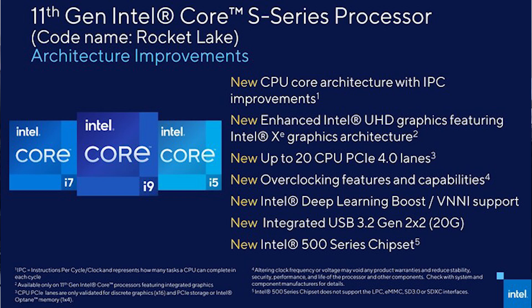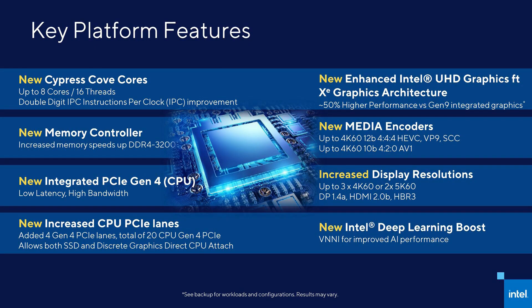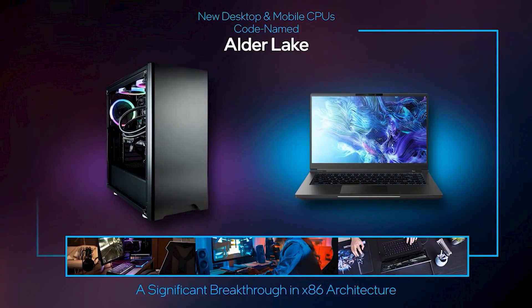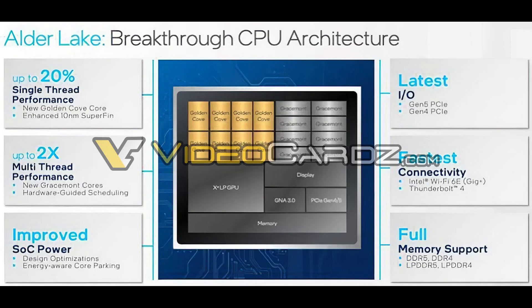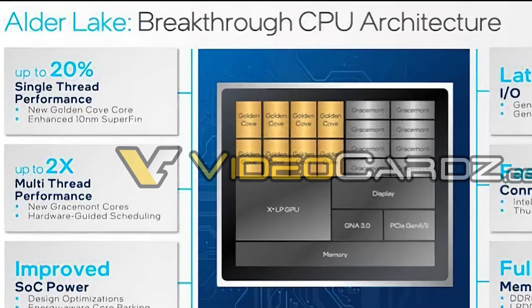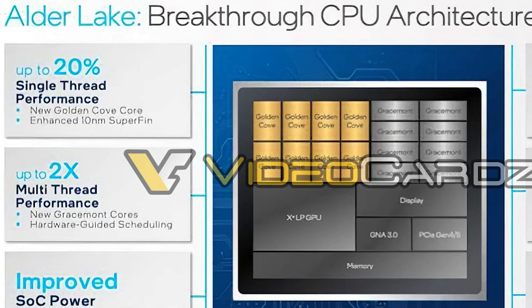One last thing for Intel — and this is Alder Lake. I know that Rocket Lake has been about as popular as a punishment, but Alder Lake could be fairly decent. We actually have an exclusive from videocards.com — I'll link the article in the video description. With Intel's Alder Lake, there are several things we can discern from this particular image. They are stating we could be seeing up to 20% performance in single-thread, up to two times increase in multi-thread performance, new Gracemont cores, and hardware-guided scheduling — which I find particularly interesting.